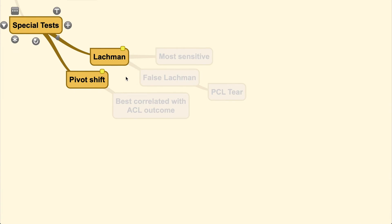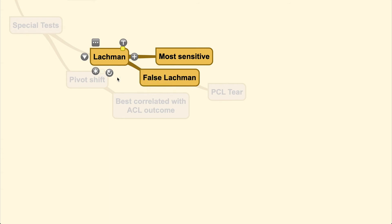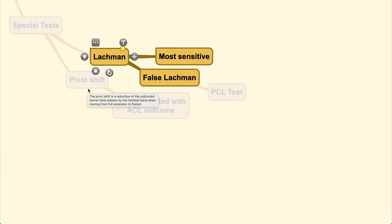There are a few tests that can be done. The Lachman test is considered the most sensitive test. In the Lachman test, there are grades 1, 2, and 3 based on the amount of anterior translation that occurs. To learn physical examination techniques, I suggest looking at videos on the YouTube channel Physio Tutor — they have many precise physical exam videos.